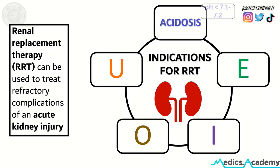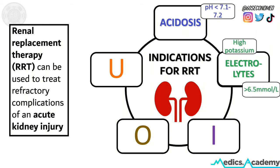A stands for acidosis — a severe acidosis that isn't responding to treatment, typically with a pH less than 7.1 to 7.2. E stands for electrolytes, and specifically the high potassium that can occur with an AKI.